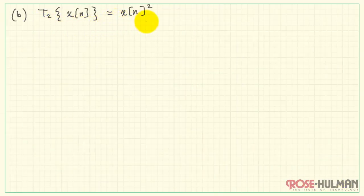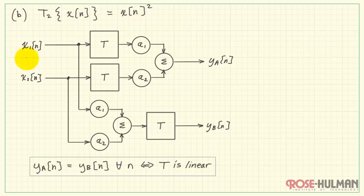Next, system T2 is X of N squared. Let's try passing this through our proof structure. X1, as it passes through this operation, would look like X1 of N squared. That passes through our scale factor A1. Similarly, X2 passes through the system, gets scaled by A2, and we have this result for Y sub A.